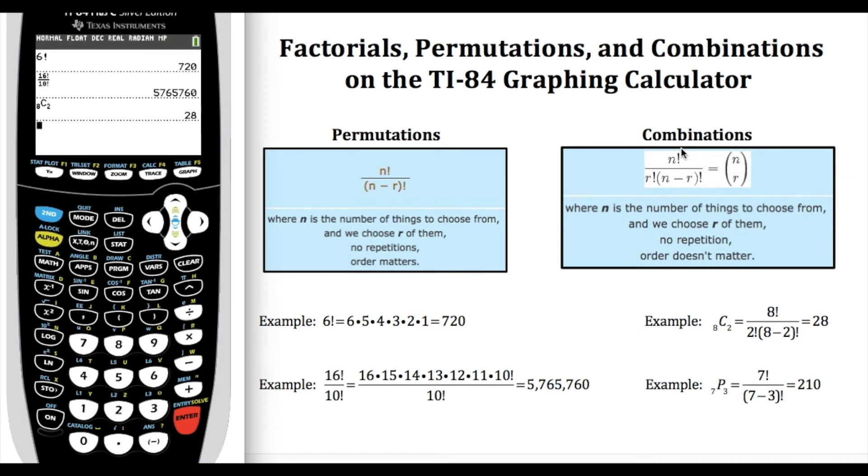This being the formula from right here: n being the total number of objects we're choosing from and r being how many we're choosing.